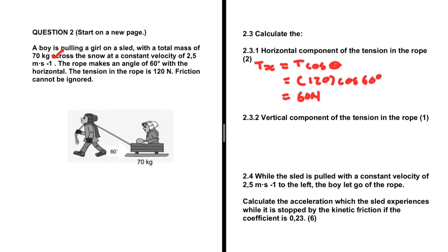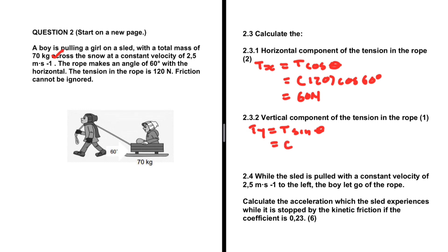For question 2.3.2, the vertical component of the tension in the rope: Ty equals T·sin(θ), which is 120 multiplied by sin(60°). Putting that in the calculator gives 103.92 newtons.